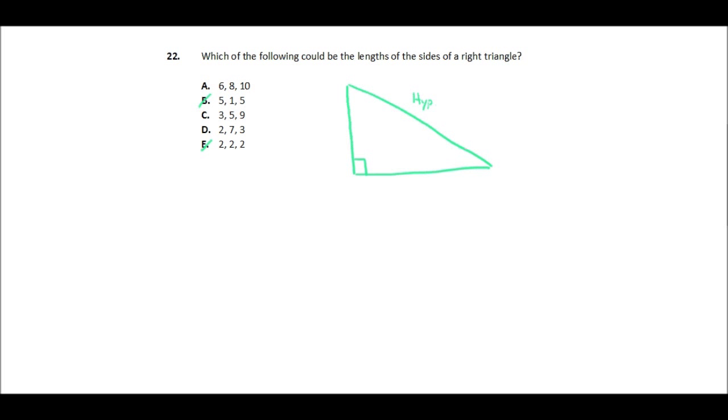Now, the other thing you might know about right triangles is that there are such things called Pythagorean triples. Pythagorean triples are pretty rare. They are right triangles whose sides all equal integers or whole numbers.